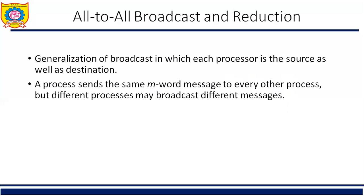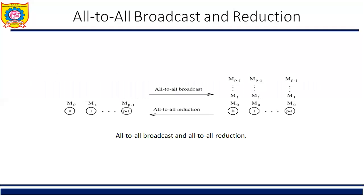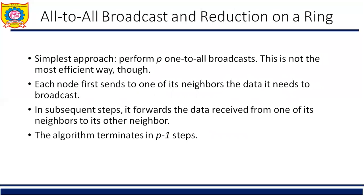In all-to-all broadcast, each processor is the source as well as destination. Each process sends the same M-word message to every other process, but different processes may broadcast different messages. All-to-all means each process sends a message to every other process, and all-to-all reduction means they can receive the message from all other processes.